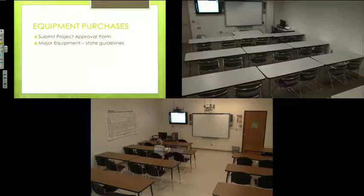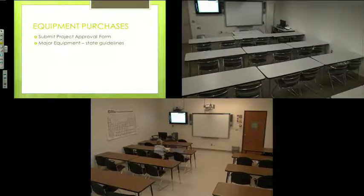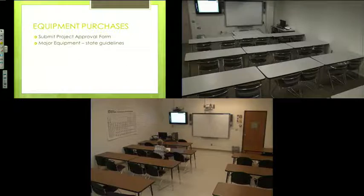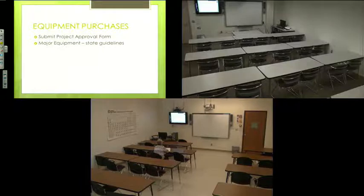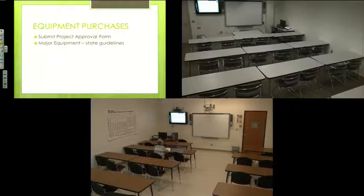Before you requisition equipment that's going to affect utilities, you need prior approval. For example, someone ordered a refrigerator with an ice maker and when it arrived for installation, there was no water line. Similarly, items in a new building were supposed to be plugged into the wall but there was no outlet. If you're going to buy anything that requires any change whatsoever to utilities, you must submit the project approval form first and get approval before proceeding.